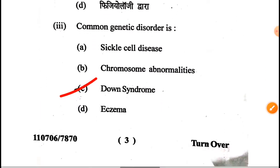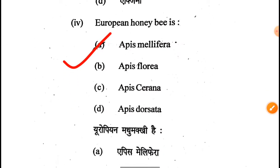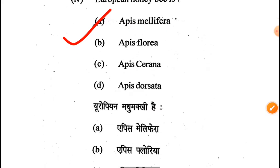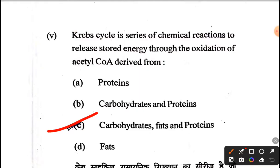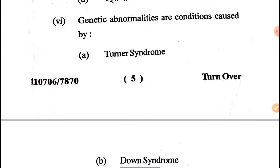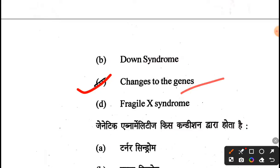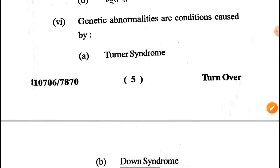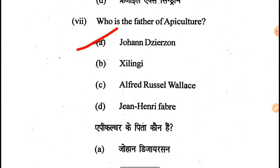The common genetic disorder answer is Down syndrome. The next question: the European honeybee is Apis mellifera. Next, the Krebs cycle is a series of chemical reactions to release stored energy through the oxidation of acetyl-CoA derived from carbohydrates, fats, and proteins — the right answer is option C. Next, genetic abnormalities are conditions caused by changes to the genes, which is mutation.